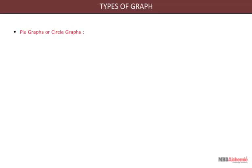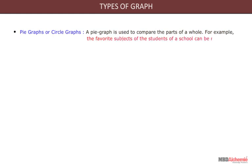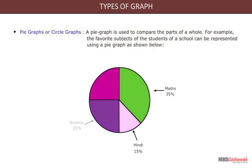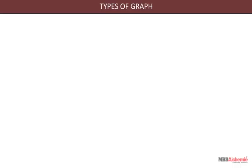Pie graphs or circle graphs. A pie graph is used to compare the parts of a whole. For example, the favorite subject of the students of a school can be represented using a pie graph as shown below. Mathematics 35%, Hindi 15%, Science 25%, English 15%, and Social Science 10%.